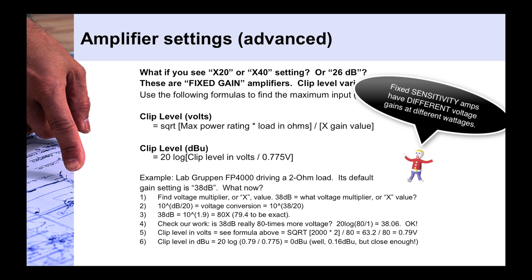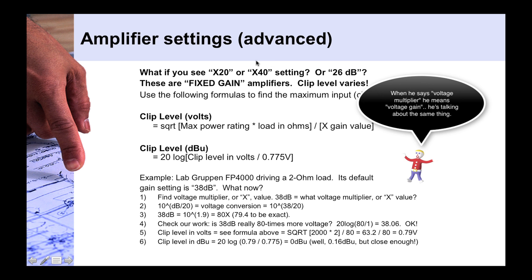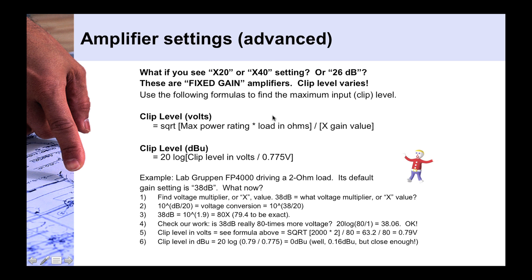So how do we find out the clip level of these if they vary based on the power level? Well, if they don't tell you in the spec sheet, which they should, but if they don't, there is a way to find it out. So first we have to do the clip level in volts, and then convert the volts to dBu, as we normally do. And we take the square root of the max power rating times your speaker load in ohms, and divide that by the voltage multiplier. So if you see an amplifier that says X20, or the voltage gain is X40, or something with an X, or how many times voltage it is, sometimes you might see 64 times, or either way you're going to see something with an X next to it in terms of voltage gain. And that's going to be the X gain value that you would place here.